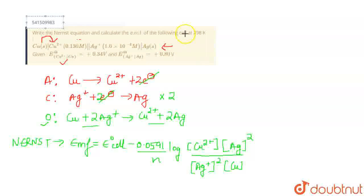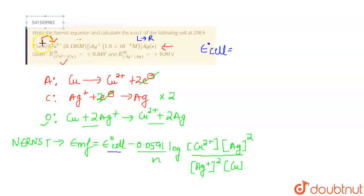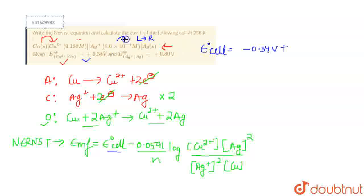Now substitute the values given in the reaction quotient. First, calculate the E°cell. The easiest way is to move from left to right in the cell representation. Copper is undergoing oxidation, so its oxidation potential is the reverse of its reduction potential: minus 0.34 volt. Moving to the right, reduction is taking place, so the reduction potential is 0.80 volt. Solving this gives E°cell = 0.46 volt.